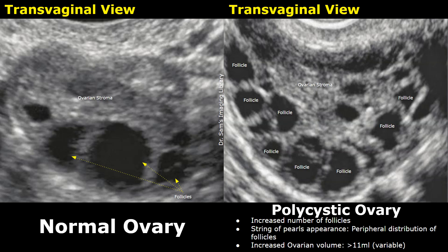On the left we have the image of a normal ovary in transvaginal view. A normal ovary will have some hypoechoic follicles. The largest follicle is a mature follicle or dominant follicle. In the menstrual cycle, the dominant follicle is the one that has developed the most and is likely to ovulate. This is the ovarian stroma, the supportive tissue framework within the ovary that surrounds the follicles and other structures.